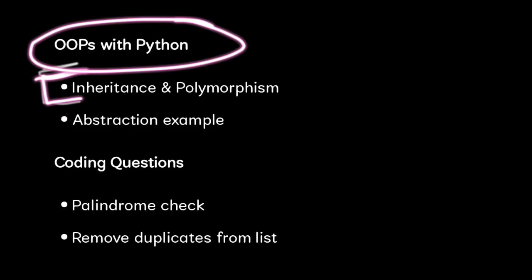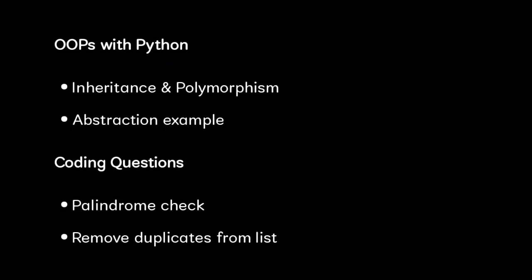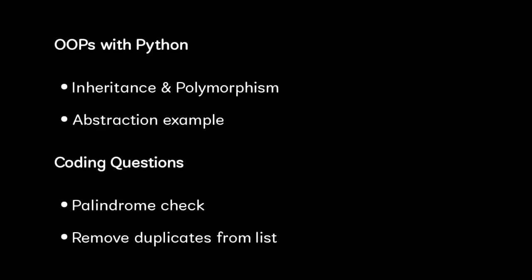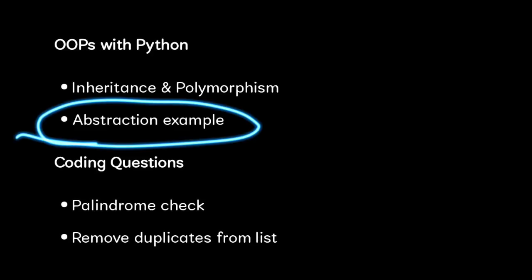When they ask questions on OOP concepts, you should explain with an example. For inheritance, explain that properties of a parent class are inherited to the child class and give a real-time example. They also asked for an example of abstraction in Python.